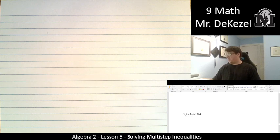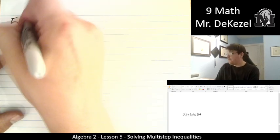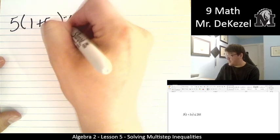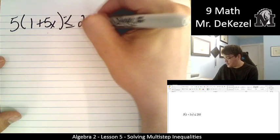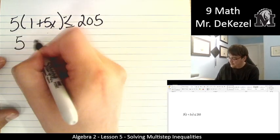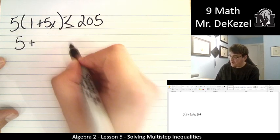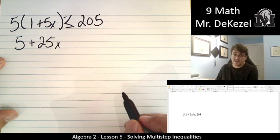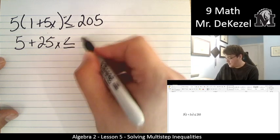Let's do a couple more. We have 5 times 1 plus 5x is less than or equal to 205. Let's get rid of our brackets. So 5 times 1 is 5. 5 times 5 is 25. And the variable comes along, so that's 25x. That's all less than or equal to 205.